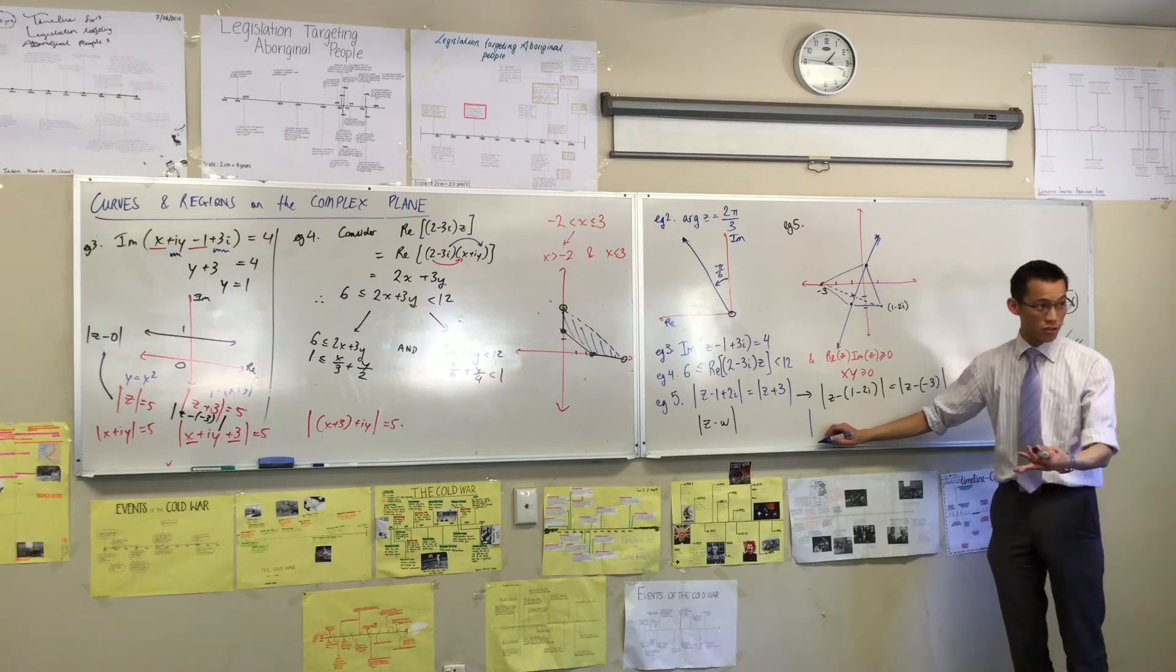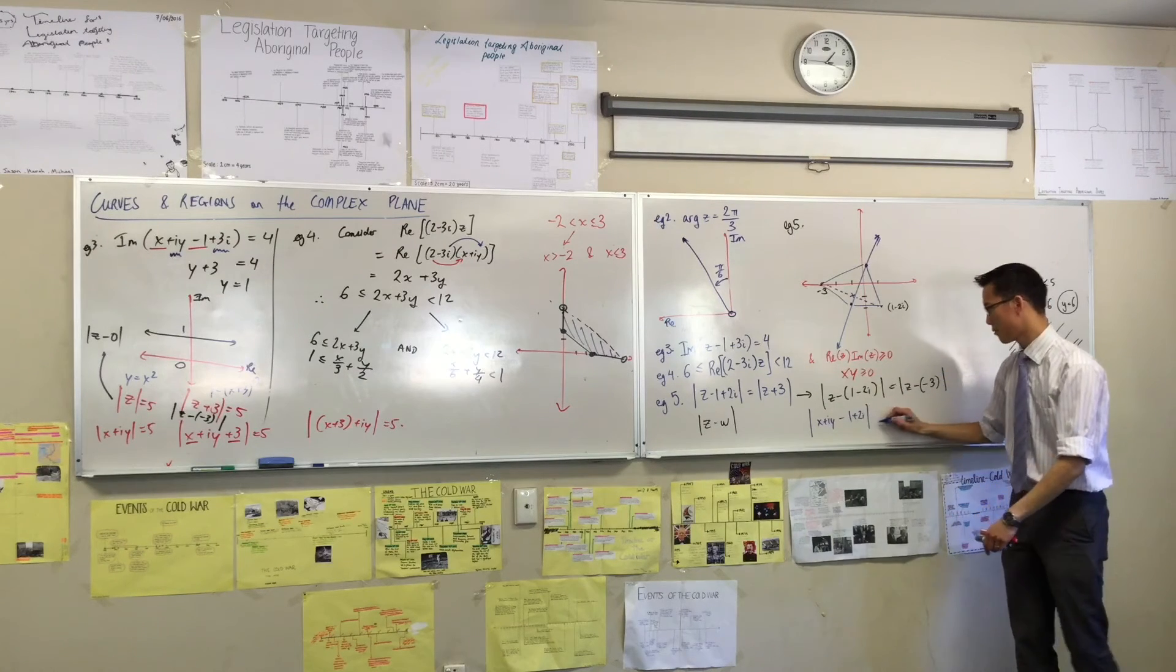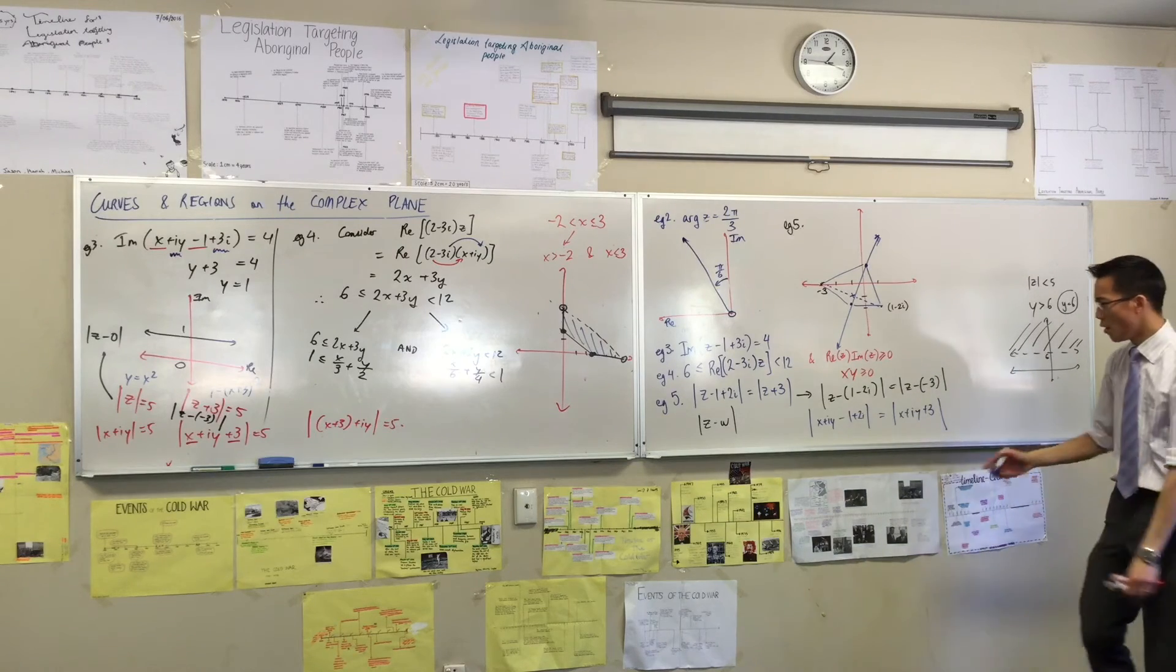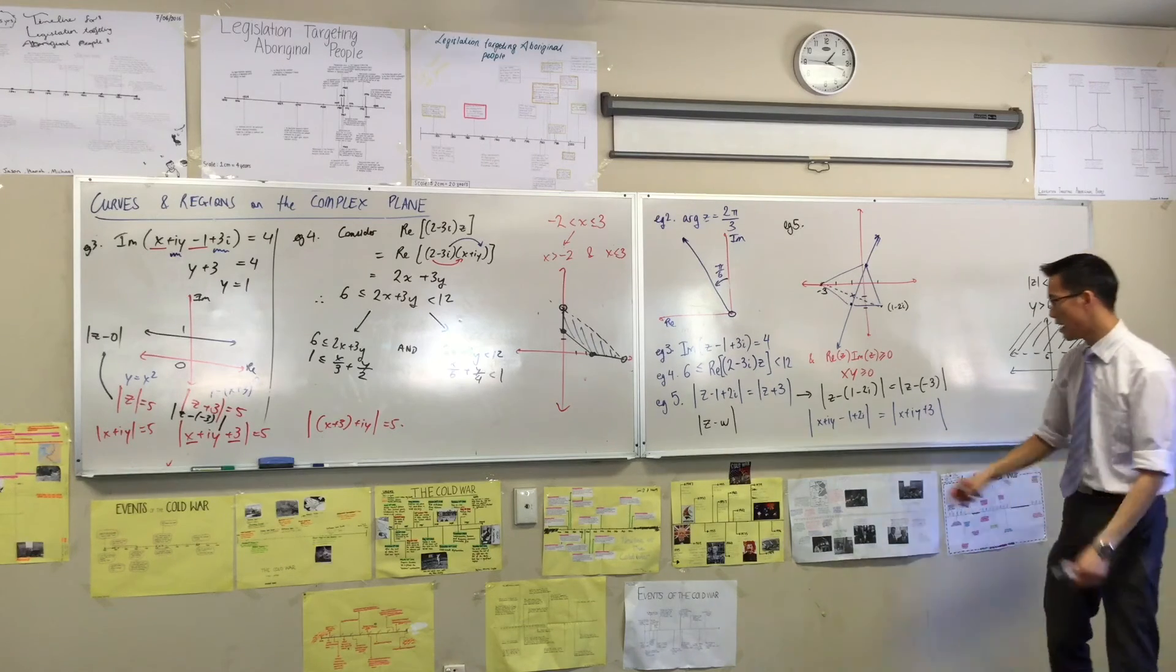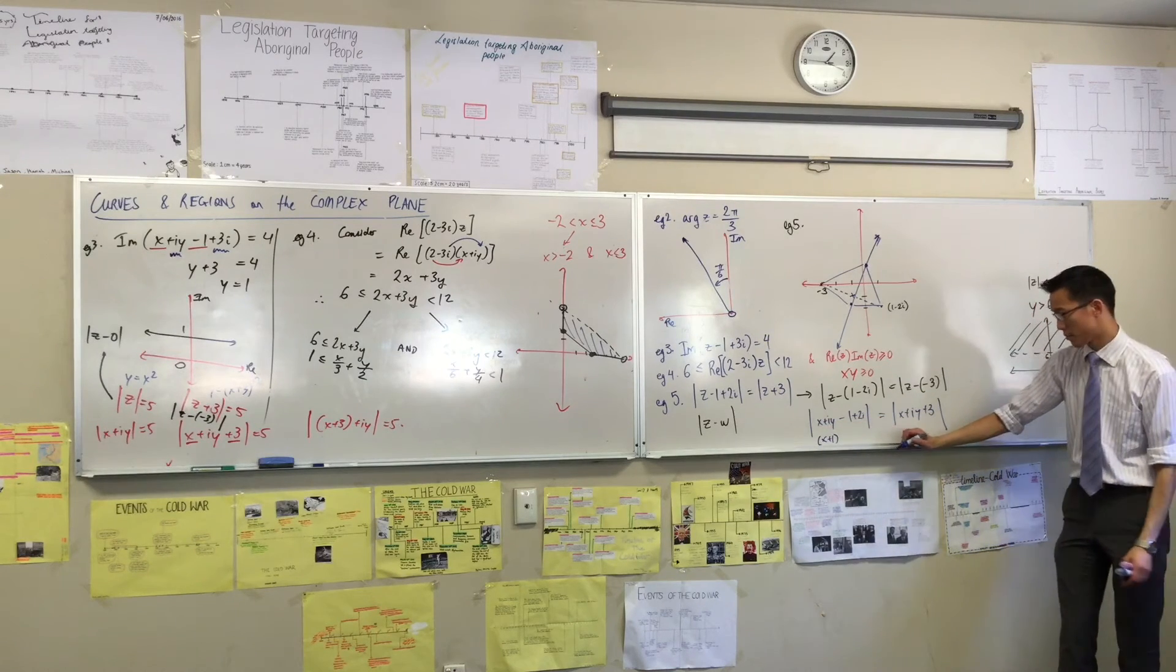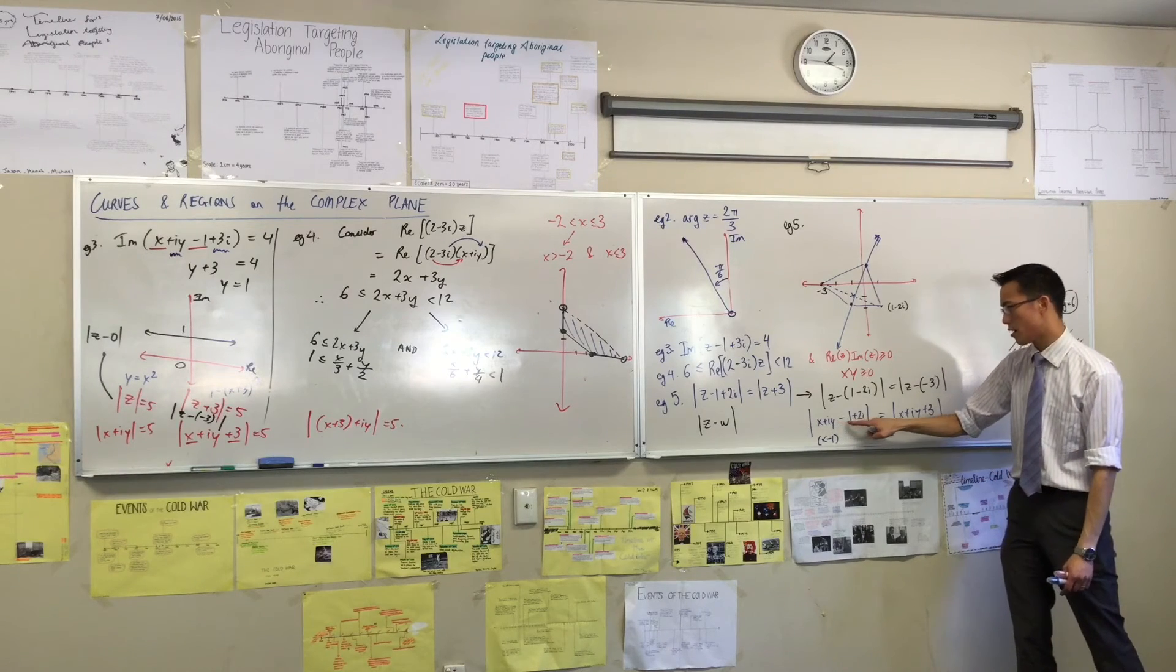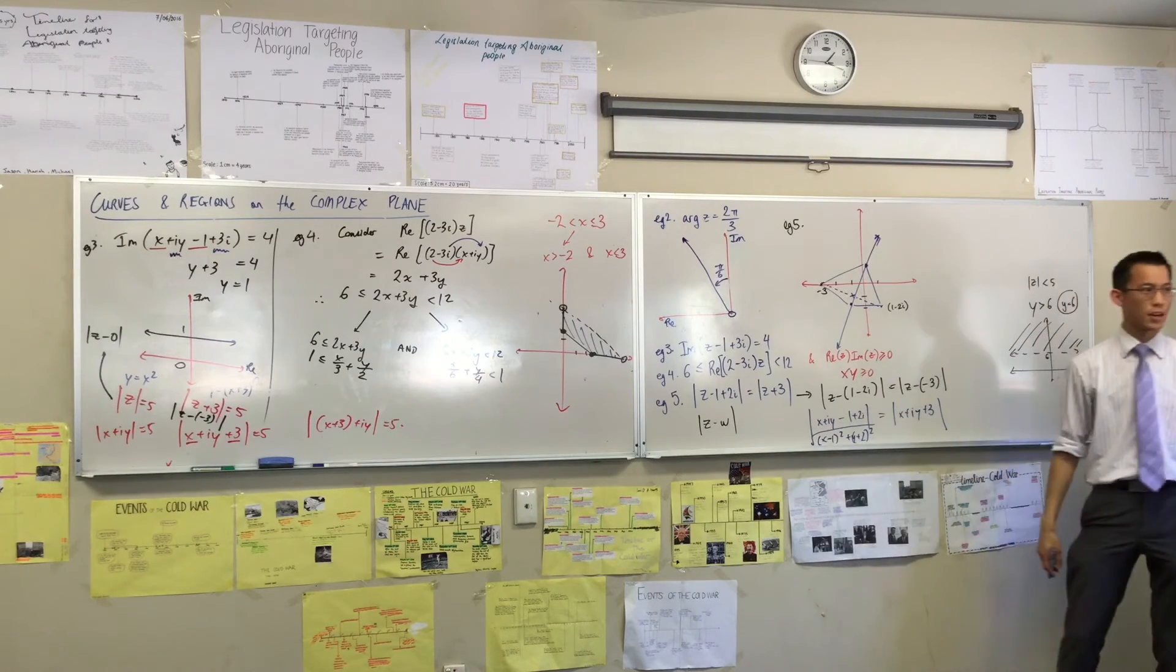I won't finish all the working out because you can see this is going to be the modulus of x plus iy minus. I'm going to go back to that 1 plus 2i. x plus iy plus 3. Now, some of you got to this point and you're like, now what do I do? Well, it's a modulus, it's a distance to a point, so you've got to go to Pythagoras, the distance formula. You just need the real part. There's a real part. x minus 1, that's real. And you need the imaginary part, which is y plus 2.